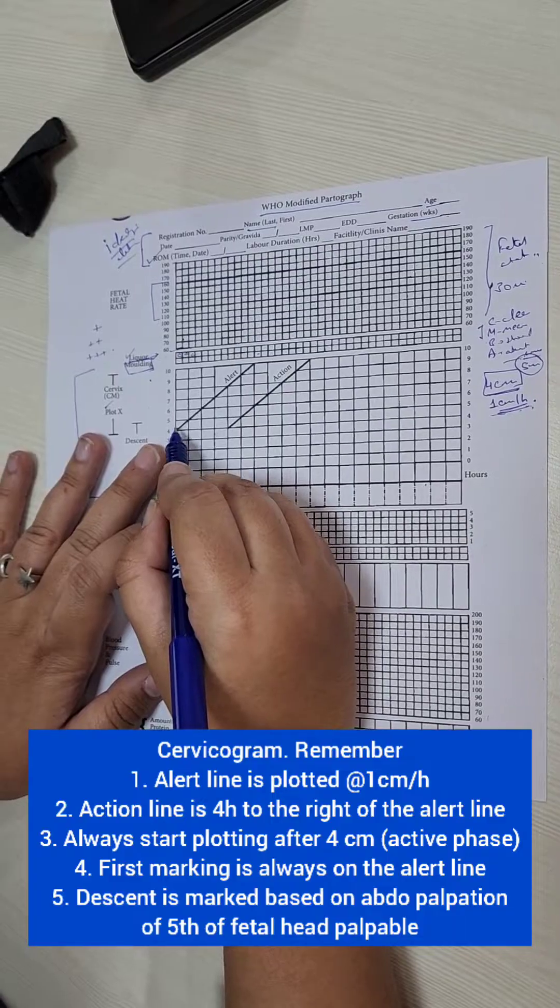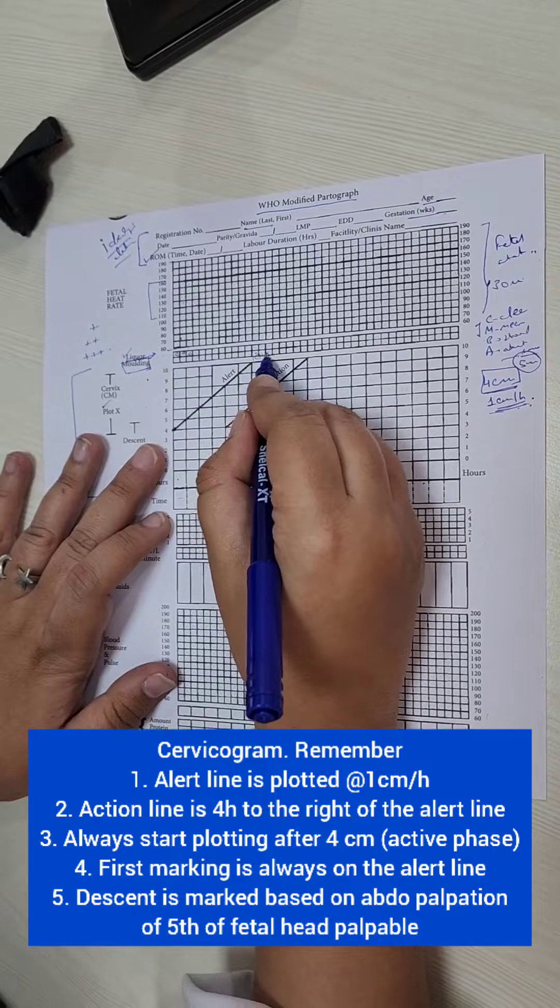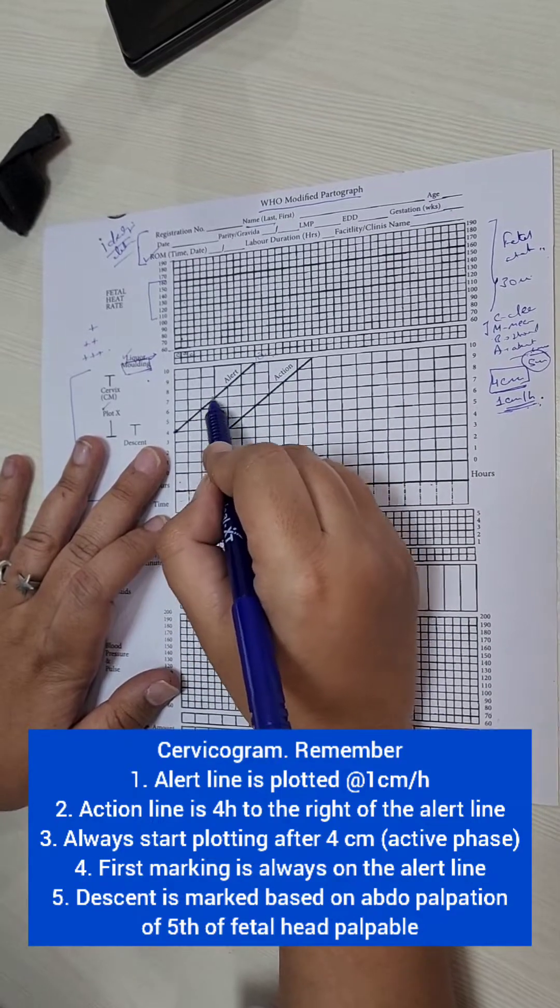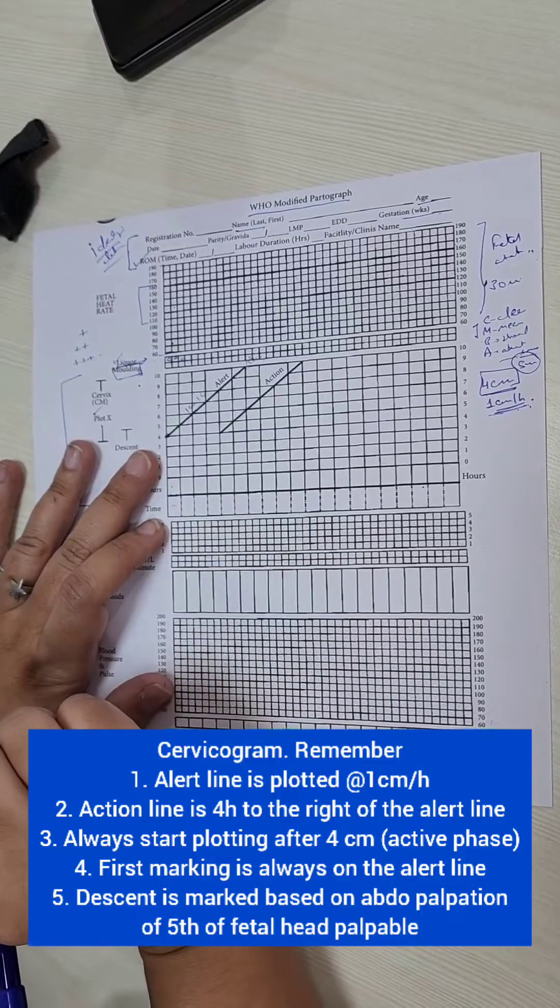So she starts at 4 centimeters and after 6 hours, 1, 2, 3, 4, 5, 6, she is 10 centimeters. So this line, this is the alert line, is plotted at the rate of 1 centimeter per hour.